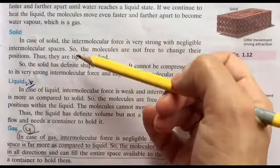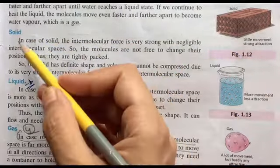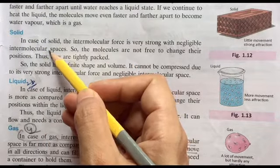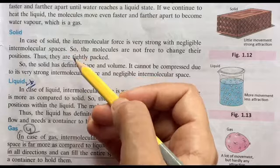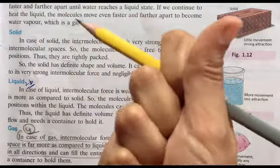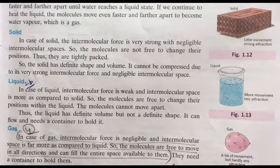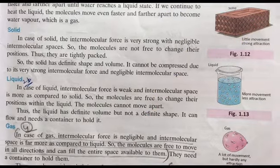In the case of solids, we discussed that intermolecular force is extremely strong and the intermolecular space or gap or distance is very less. That's why they are tightly packed. That's why their shape and volume are fixed. They cannot be compressed.